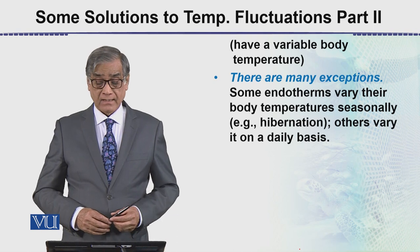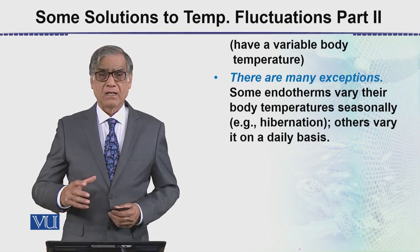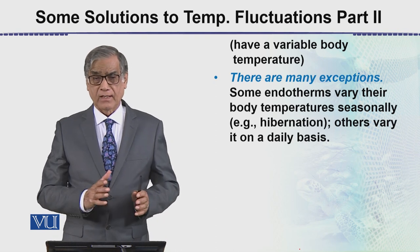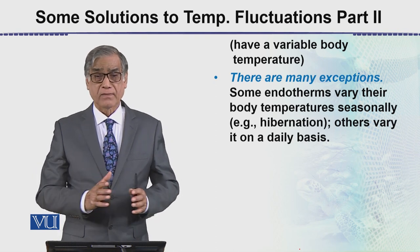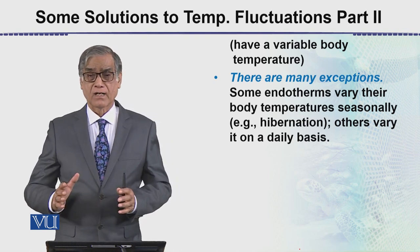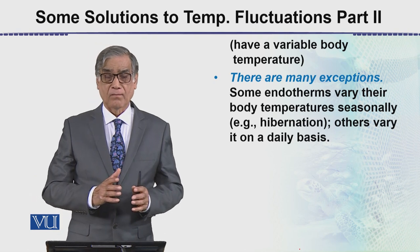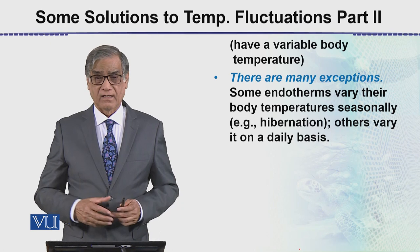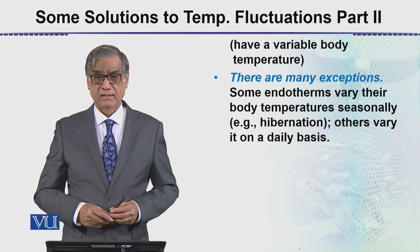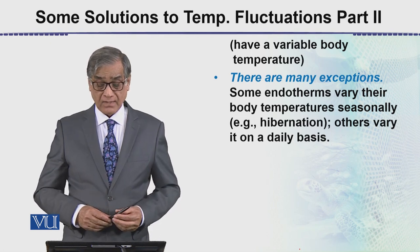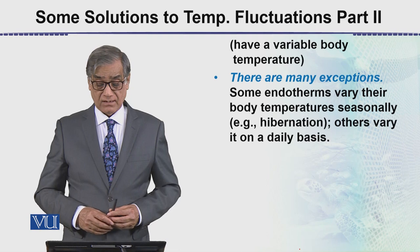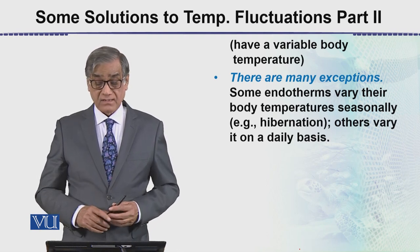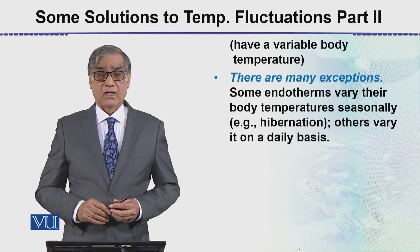Heterotherms have a variable body temperature. Some animals have a range of body temperatures and vary from cooler to hotter. There are many exceptions — some endotherms vary their body temperature seasonally.